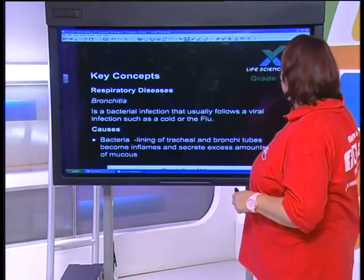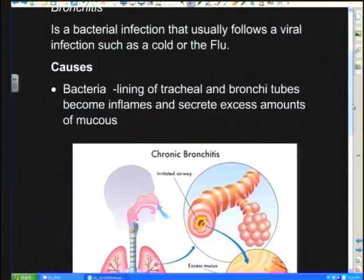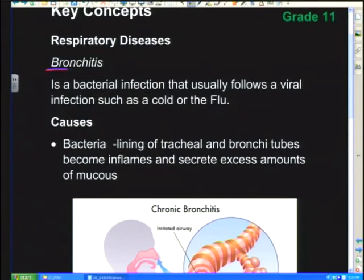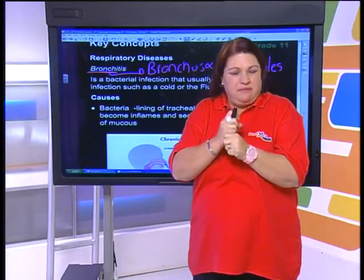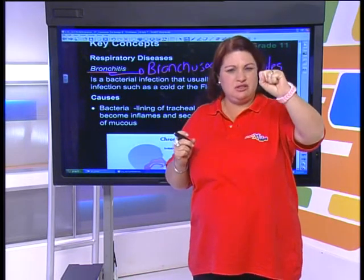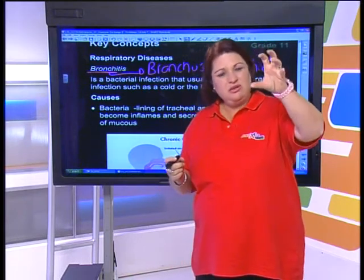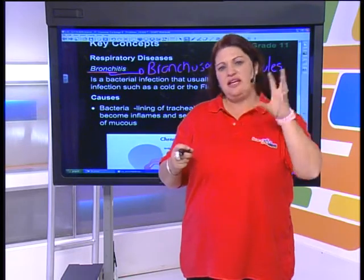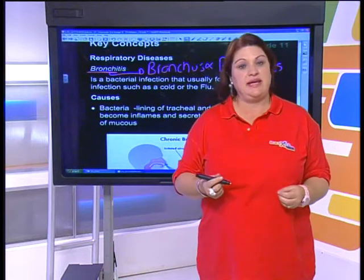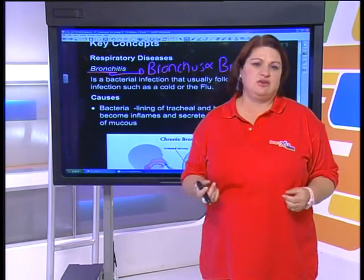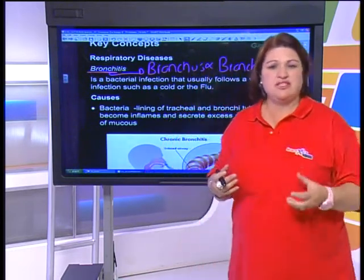The next disease, more prevalent in winter, is bronchitis. The word itself tells us it attacks the bronchial tubes — the bronchus and bronchioles. Unlike asthma where it's muscle spasm, bronchitis involves fluid and phlegm getting stuck in the tubes, so our ventilation system isn't working properly. Usually we get a viral infection like flu, which makes us more susceptible to bacterial infection, and the bacteria causes large amounts of mucus to be produced, blocking the tubes.